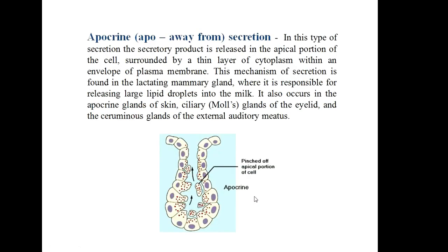Apocrine secretion — apo means away from. In this type of secretion, the secretory product is released in the apical portion of the cell surrounded by a thin layer of cytoplasm within an envelope of plasma membrane. This mechanism of secretion is found in the lactating mammary gland, where it is responsible for releasing large lipid droplets into the milk. It also occurs in the apocrine glands of skin, ciliary or Moll's glands of the eyelid, and the ceruminous glands of the external auditory meatus.